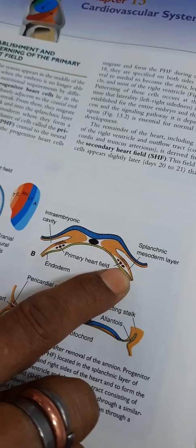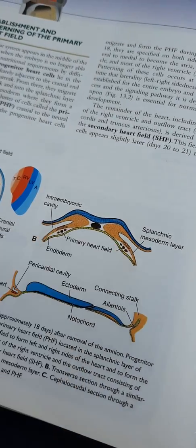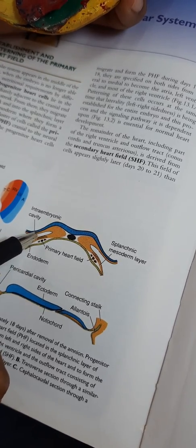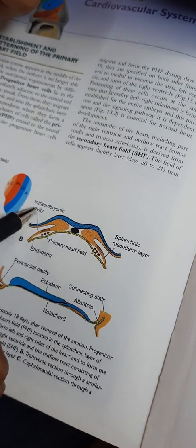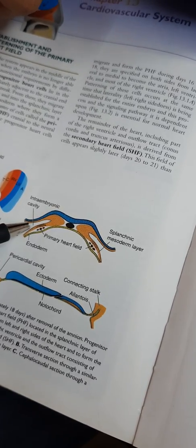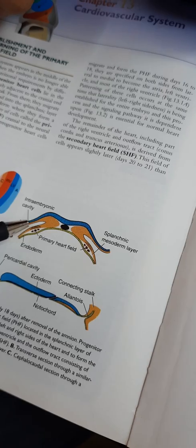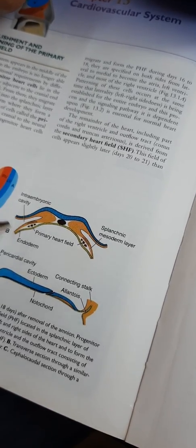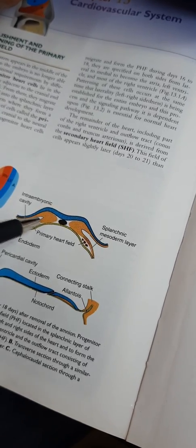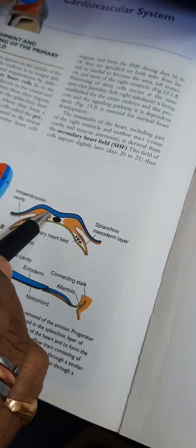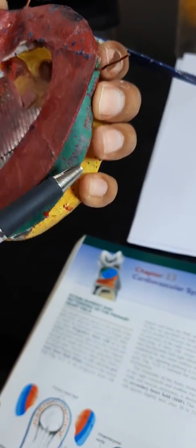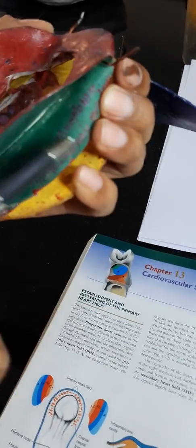This is the splanchnopleuric. This is the intraembryonic cavity or intraembryonic coelom. Above this cavity is the somatopleuric intraembryonic mesoderm, and below this cavity is the splanchnopleuric. Medially they are continuous to each other. This cavity will continue with the opposite side. So this midline cavity part is called the future pericardial cavity.